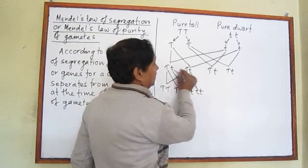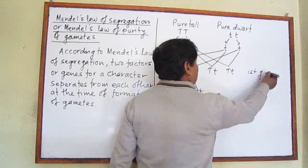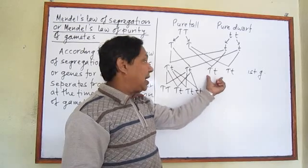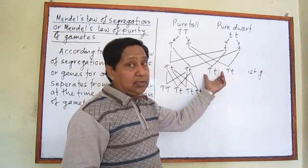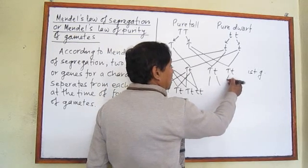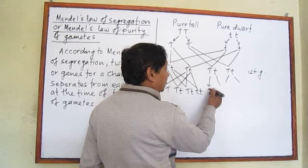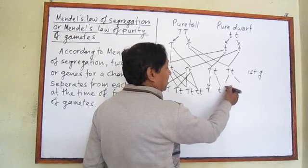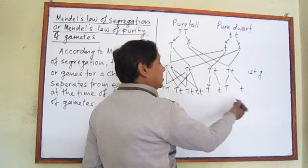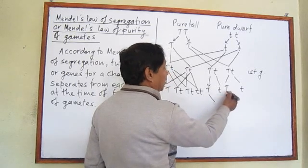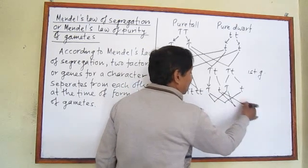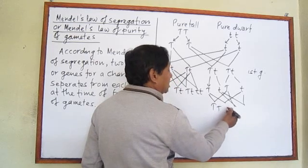In the first generation, capital T and small t are together in this plant — meaning tallness and dwarfness are together. But at the time of gamete formation, T separates from t. Each gamete receives only one of these — either capital T or small t. These gametes then combine with other gametes, forming new sets of genes: TT, Tt, Tt, and tt.